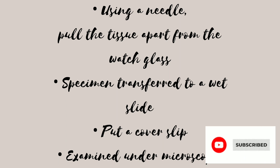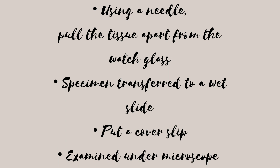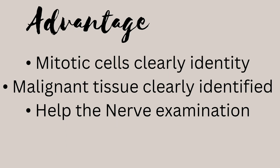Using a needle, pull the tissue in the watch glass, then transfer the specimen to a wet slide. Put a coverslip on it and examine it under the microscope. There are some advantages and disadvantages. Mitotic cells and malignant tissues are clearly identified, and it helps with nerve examinations.